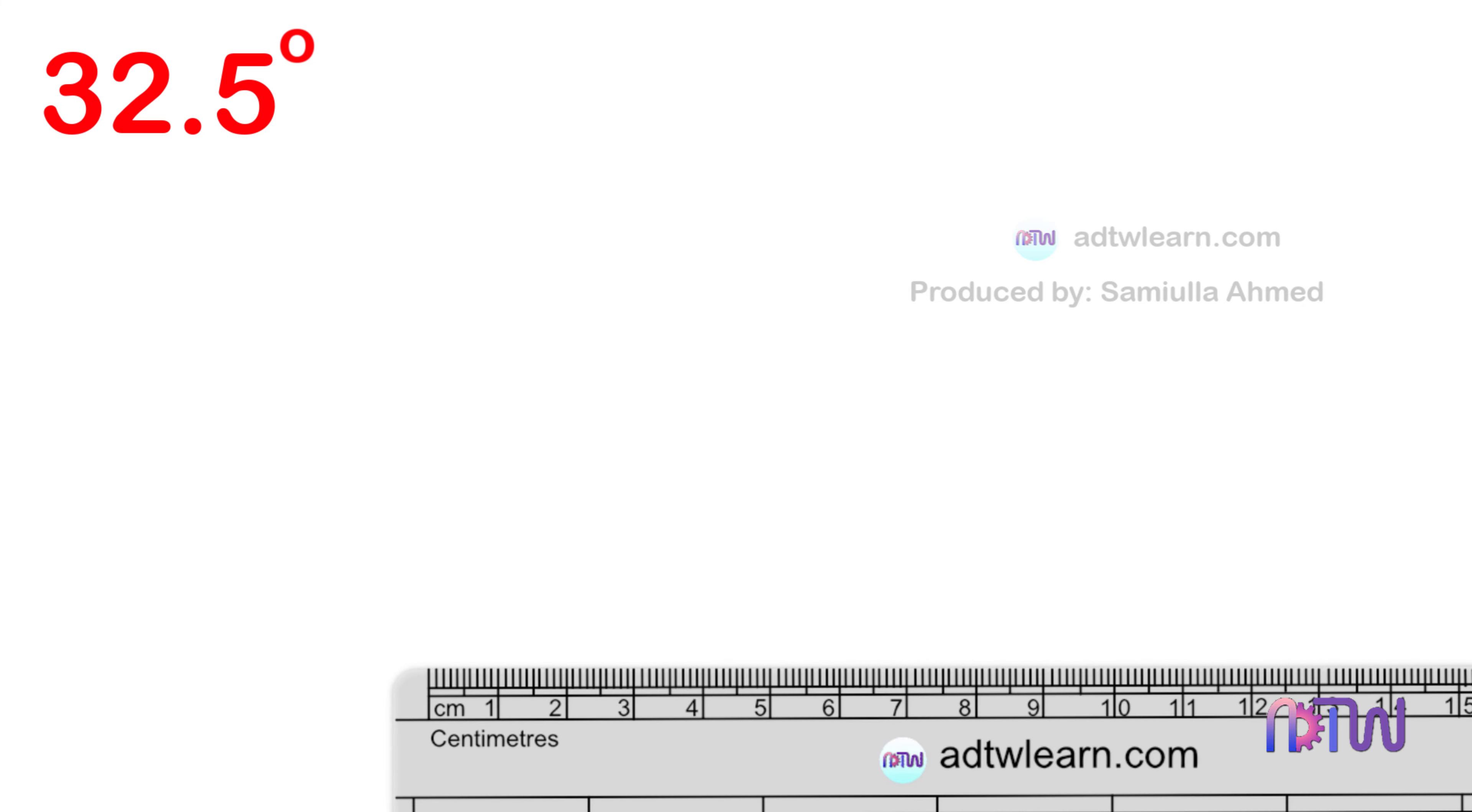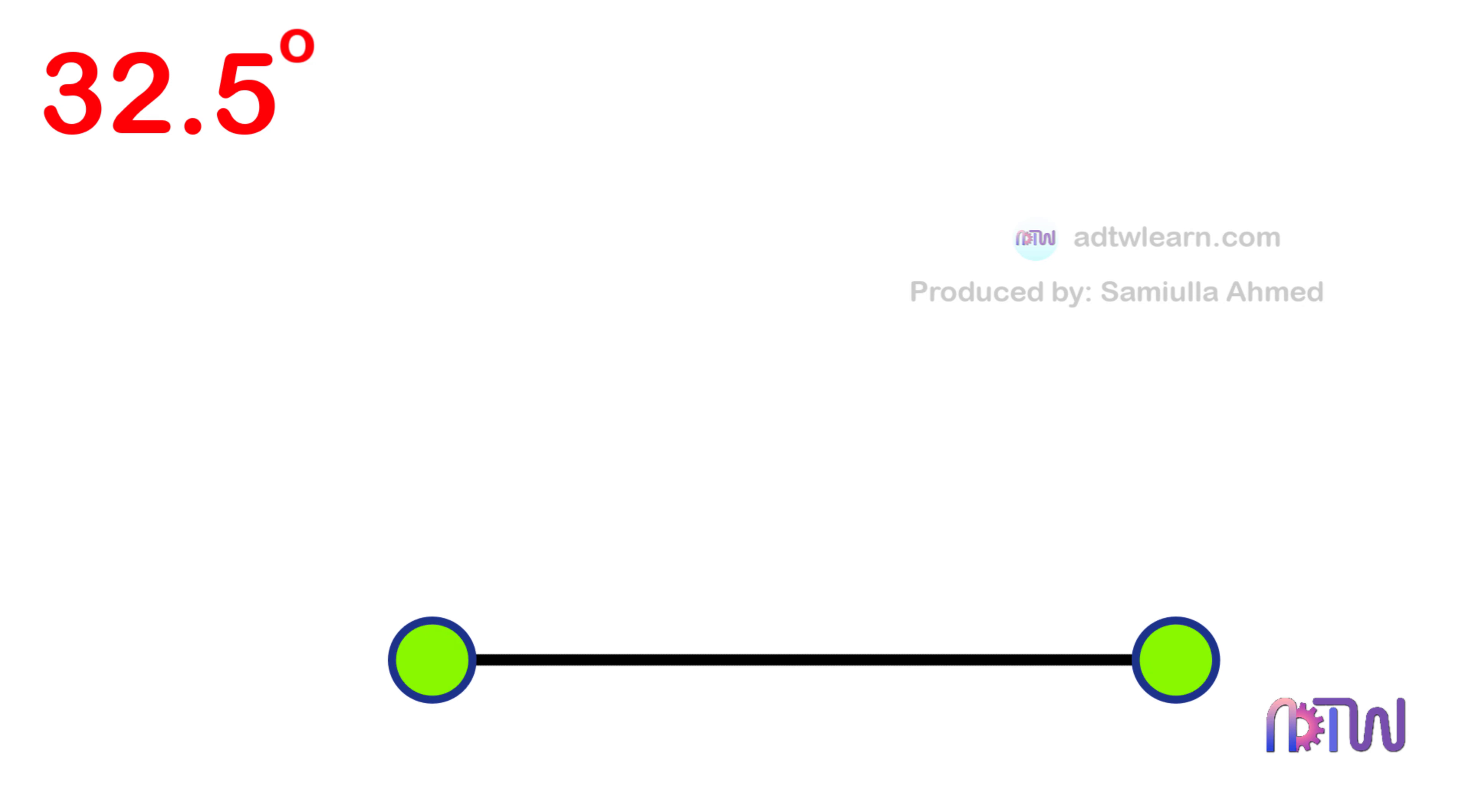Take a ruler, draw a horizontal line, and label the endpoints as A and B.